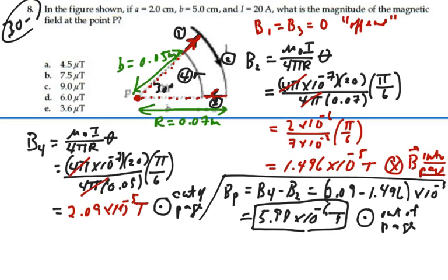And since it was B₄ that was bigger than B₂, that's going to be out of the page. So it's going to be coming out of the page. So our answer in this one is 5.98 or we can round that to 6 microtesla out of the page.